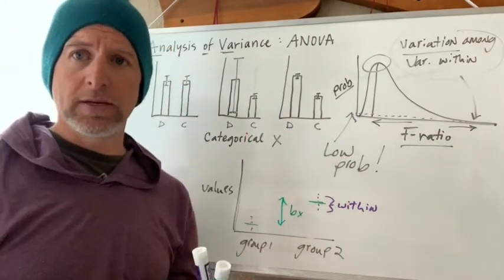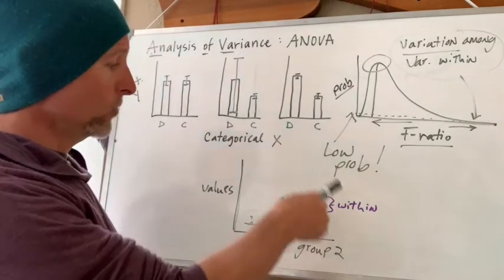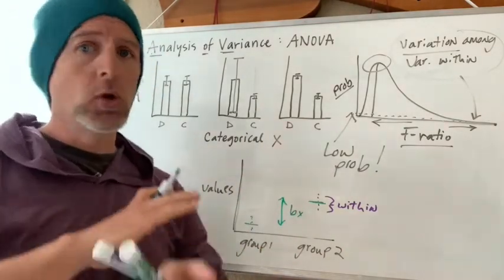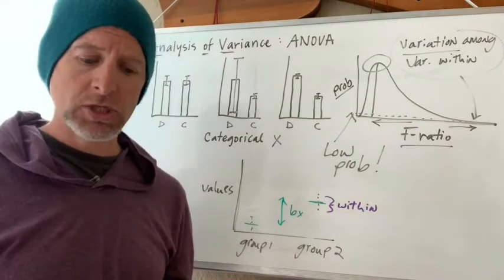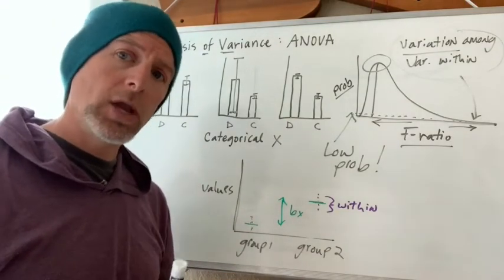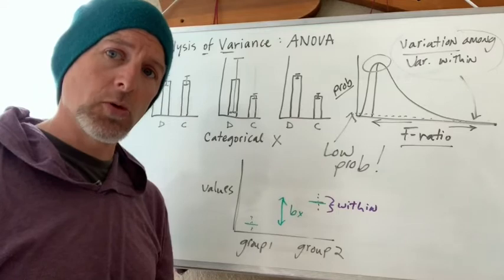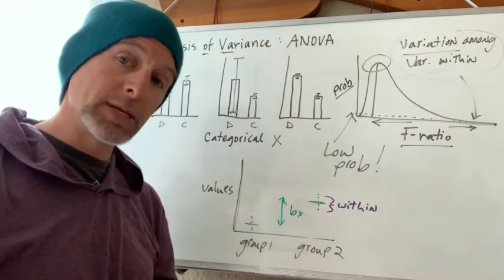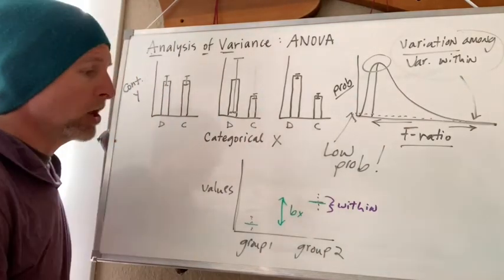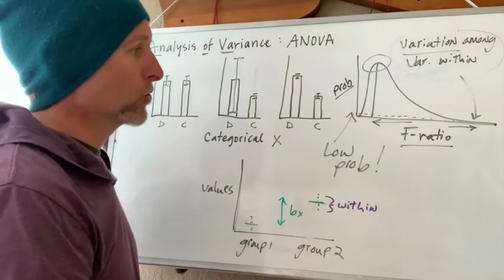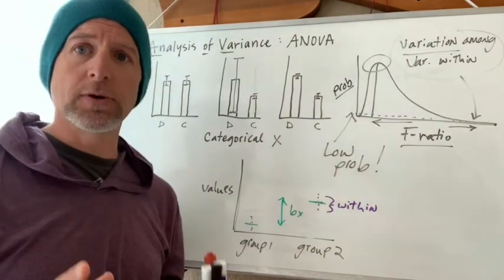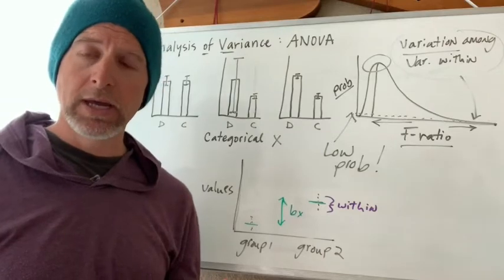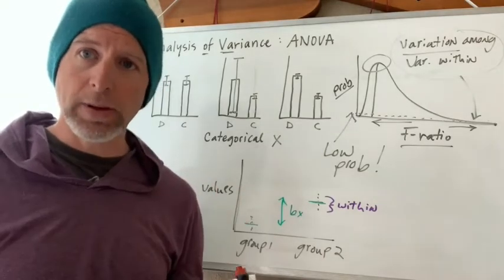This is all dependent on us starting with sampling a population where there's no pattern, no difference between the groups. In other words, the null hypothesis is true. There's no pattern. This is really important because all of these scores or ratios are computed from situations where there is no pattern.